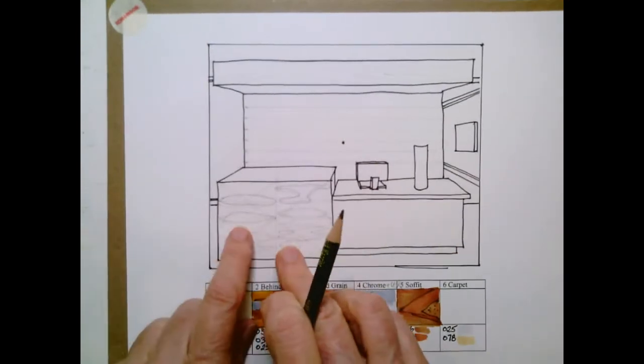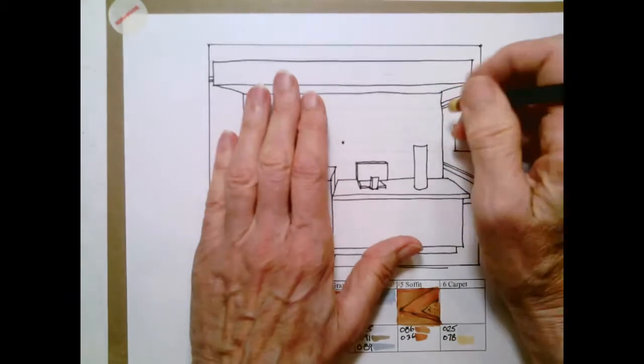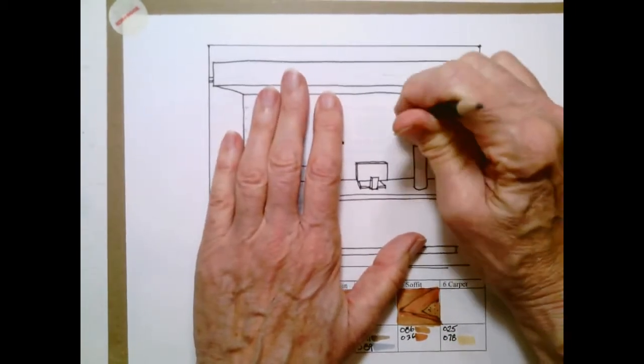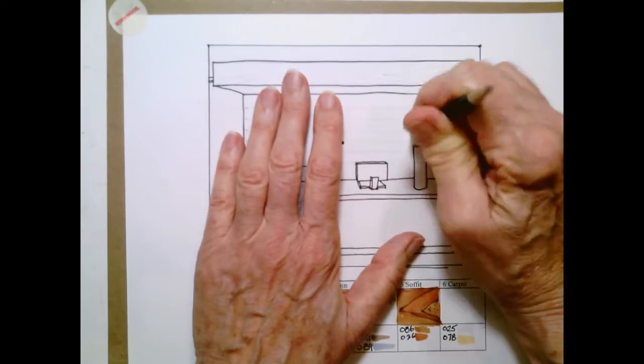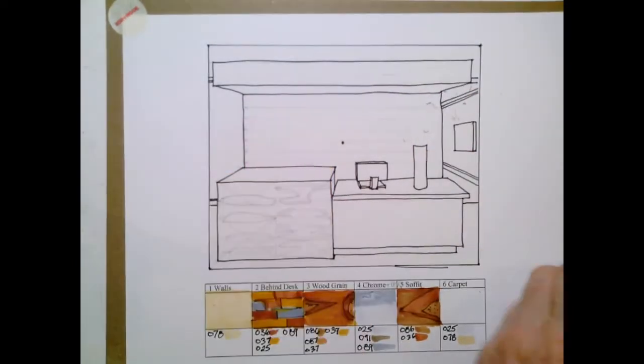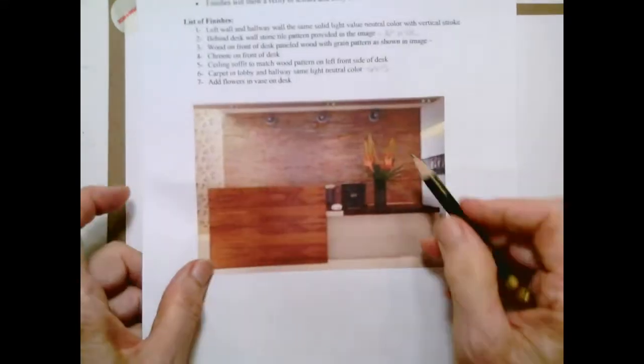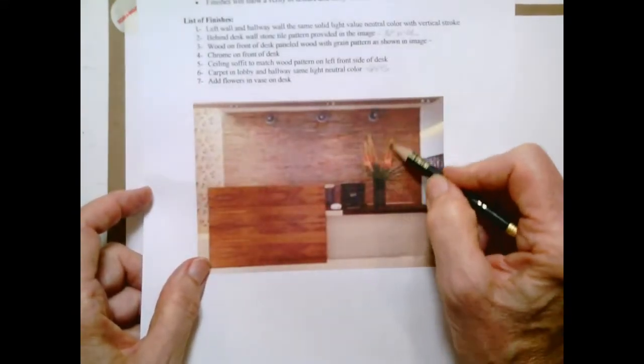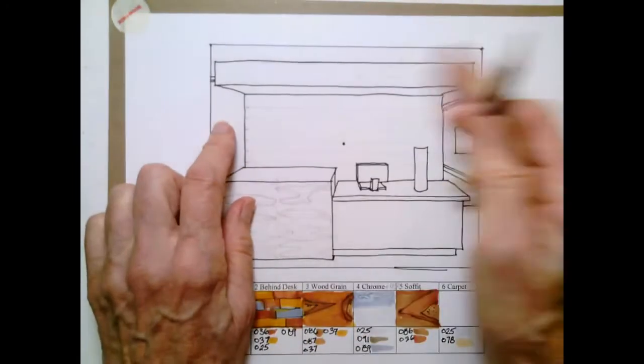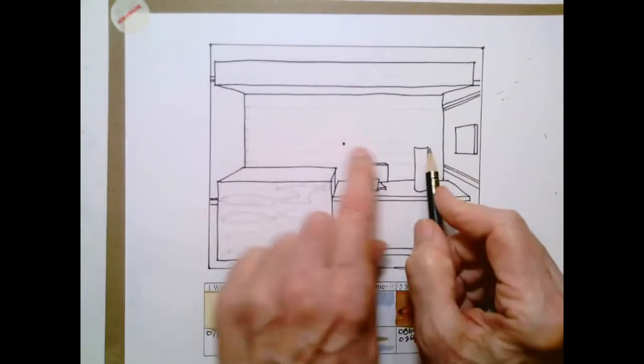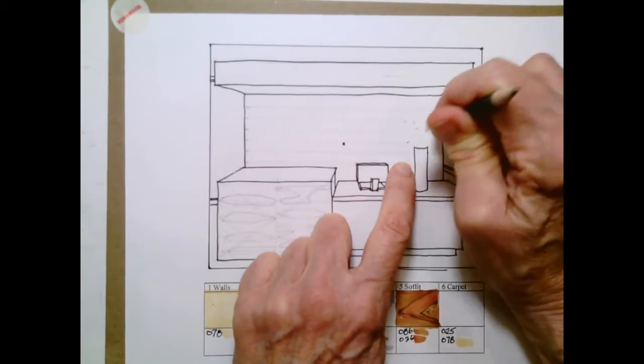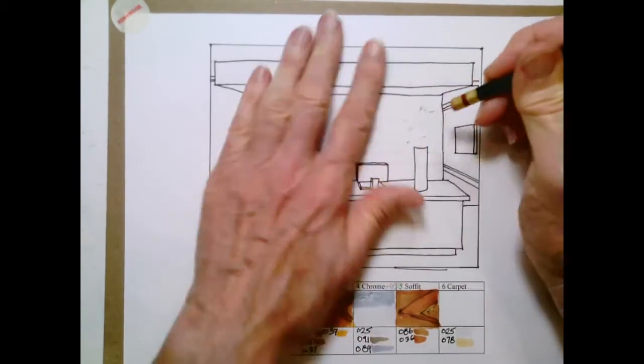The other thing is, so there was one was the wood grain here. One is the back wall. And then I'm going to take my eraser because the first thing that I'm going to draw in here or put in there is going to be the flower arrangement.